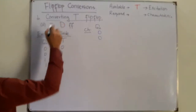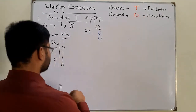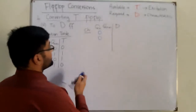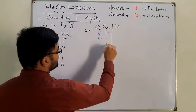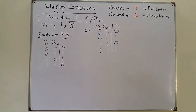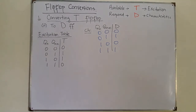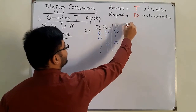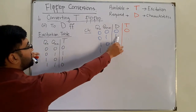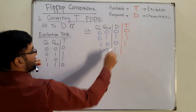The third conversion is the T flip-flop to D flip-flop, where the required flip-flop is the D flip-flop. The characteristic table has Qn, Qn+1, and D, with combinations: 0→0 (D=0), 0→1 (D=1), 1→0 (D=0), 1→1 (D=1). Matching with the T excitation table: 0→0 gives T=0; 0→1 gives T=1; 1→0 gives T=1; 1→1 gives T=0.